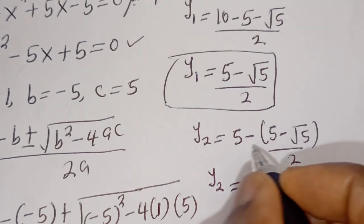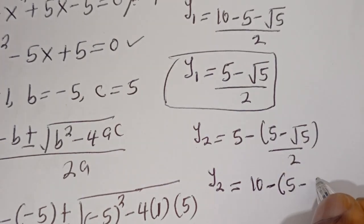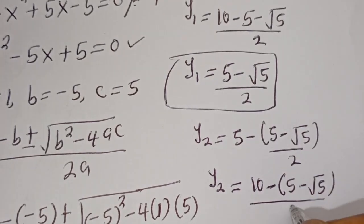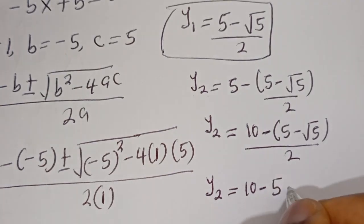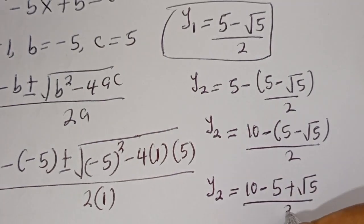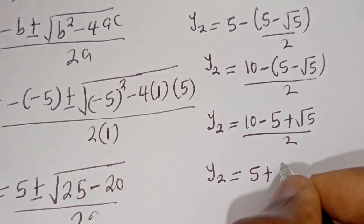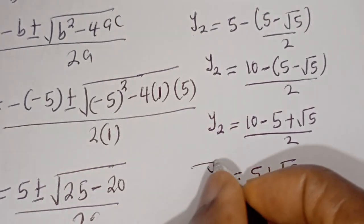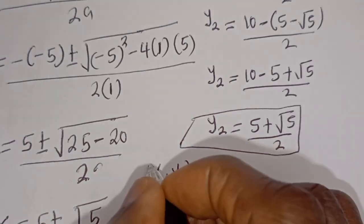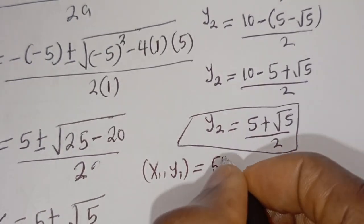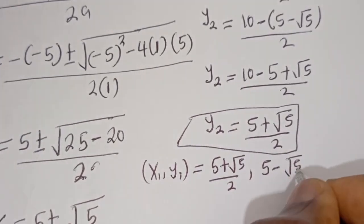And y2 equals 5 minus x2, which is 5 minus (5 minus root 5 over 2). That gives y2 equals (10 minus 5 plus root 5) over 2, so y2 equals 5 plus root 5 over 2. Our final answer is: x1, y1 equals (5 plus root 5 over 2, 5 minus root 5 over 2).